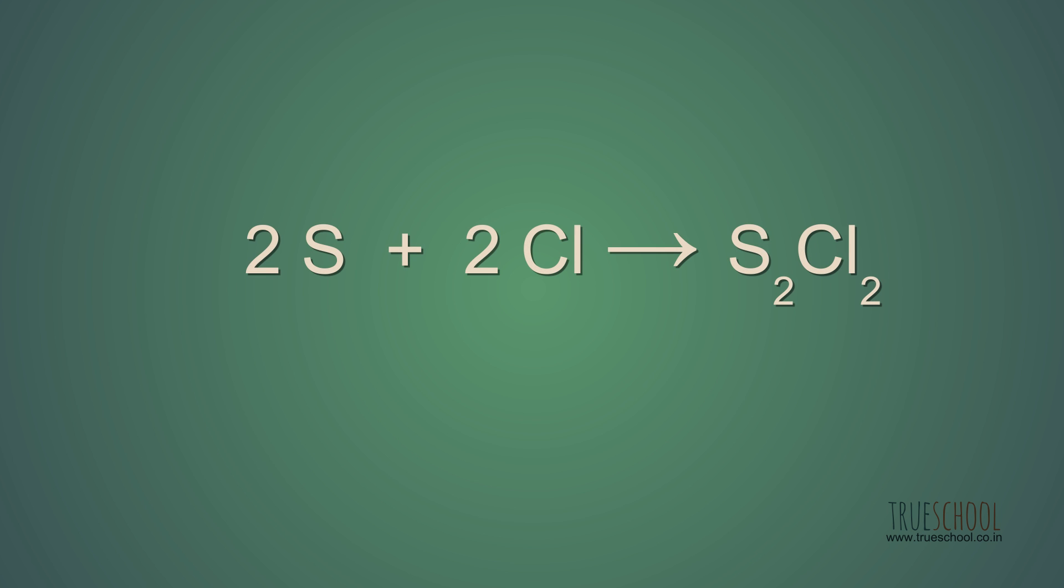Now we will discuss the solution of the problem we had earlier discussed. In S2Cl2, 2 moles of S reacts with 2 moles of Cl to give 1 mole of S2Cl2. One mole of Cl is 1 equivalent, hence 2 moles of Cl is 2 equivalent, and so will be 2 moles of S. Hence 1 mole of S will be 1 equivalent. This is our answer. N-factor for S is 1 and n-factor of S2Cl2 is 2.